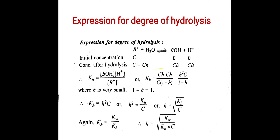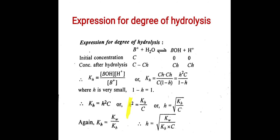We know KH equals the molar concentration of BOH times the molar concentration of H⁺, divided by the molar concentration of B⁺. Substituting the concentrations, we get KH equals CH times CH divided by C times (1 minus H). One C from numerator and denominator cancels, giving H² C divided by (1 minus H). Since H is very small, (1 minus H) equals 1, so KH equals H²C, or H equals the square root of KH over C.